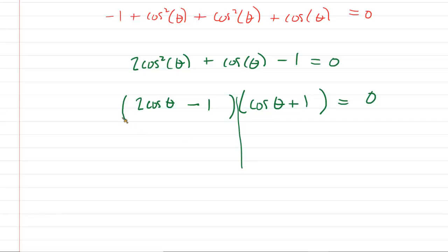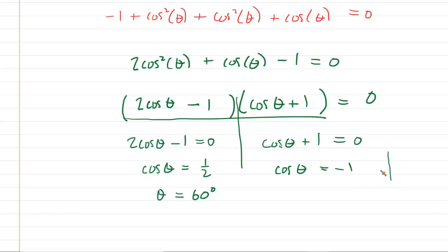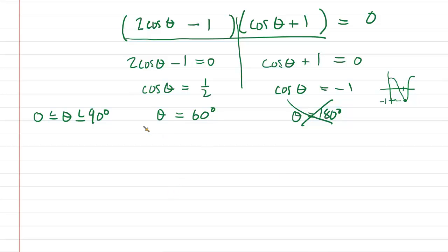We can now set each factor equal to 0. 2 cos(θ) - 1 = 0, and cos(θ) + 1 = 0. If we solve the left side, cos(θ) equals 1/2. You have to think what angle has a cosine equal to positive 1/2. Hopefully you remember that equals 60 degrees. Over here, cos(θ) equals -1. If you think of the cosine function, at that angle the value is -1, and that is 180 degrees. However, let's not forget that theta was bounded between 0 and 90 degrees. So we can actually ignore that value there. We can reject it. So we have ourselves a critical value.